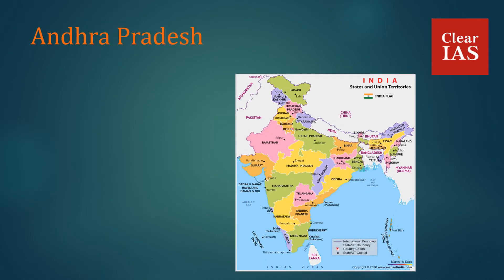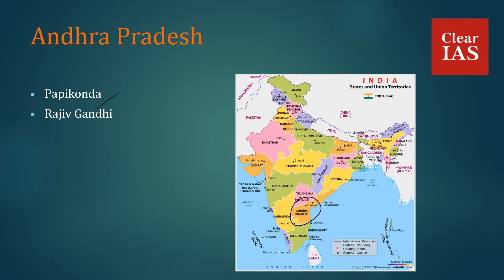The first state is Andhra Pradesh. In Andhra Pradesh, we have three National Parks: Papikonda, Rajiv Gandhi, and Sri Venkateswara National Park.